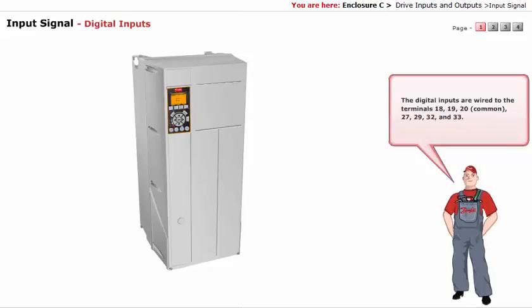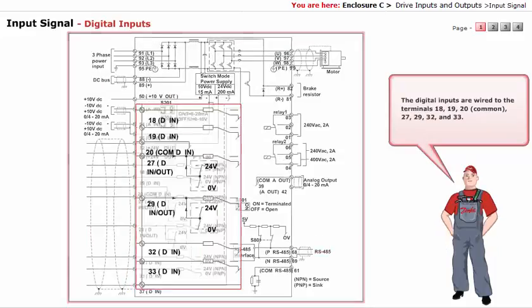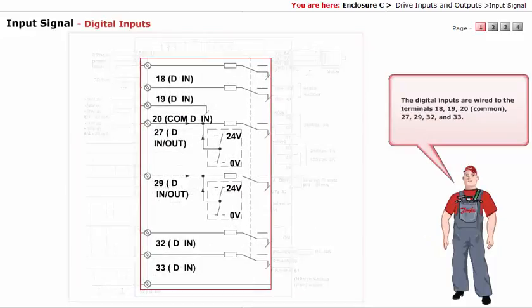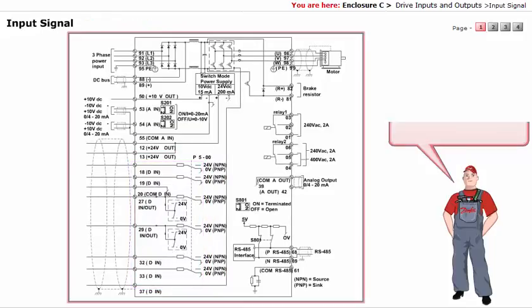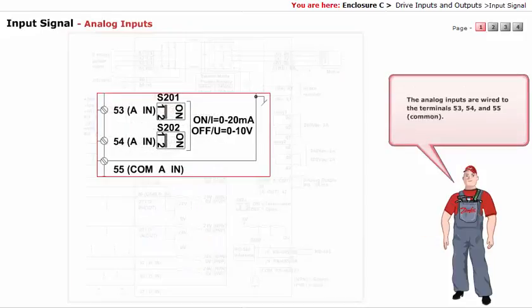The digital inputs are wired to the terminals 18, 19, 20 common, 27, 29, 32, and 33. The analog inputs are wired to the terminals 53, 54, and 55 common.